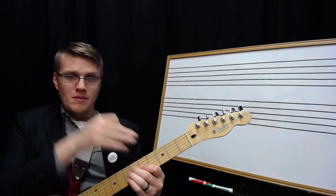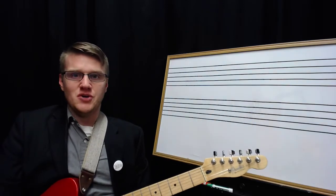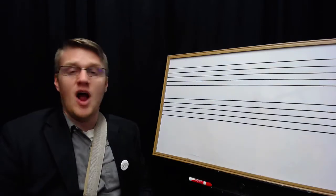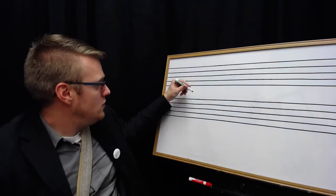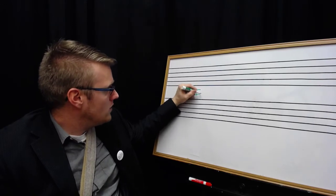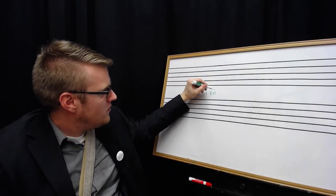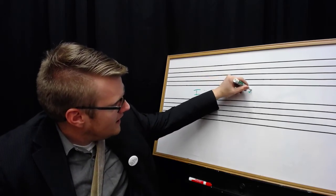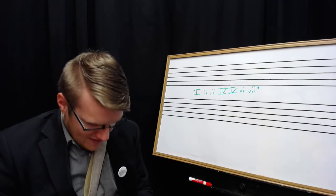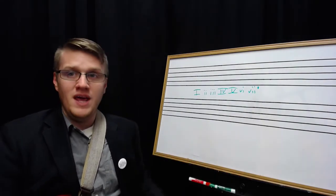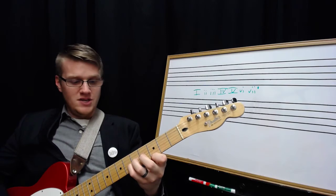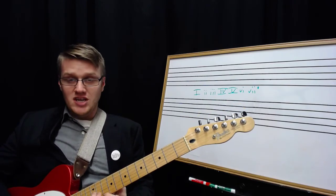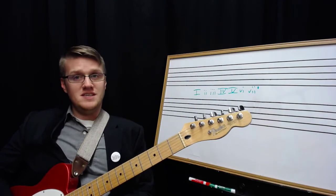The last one is to take triads through the diatonic order of a key. Now we can do it for major, harmonic minor, or melodic minor. I'm going to do it for major right now. So the one chord's major. Two is minor. Three is minor. Four is major. Five is major. Six is minor. And seven is diminished. So take that order and run through it in an inversion. So, C major, D minor, E minor, F major, G major, A minor, B diminished, C major.